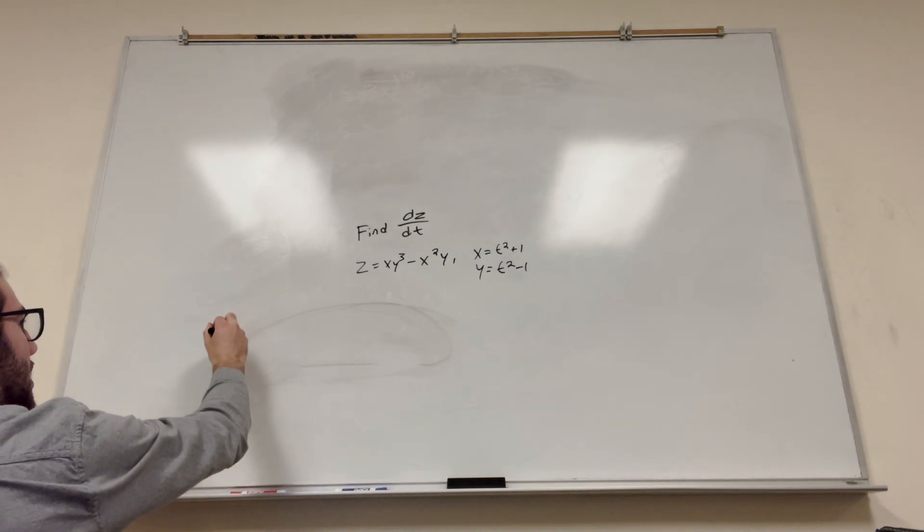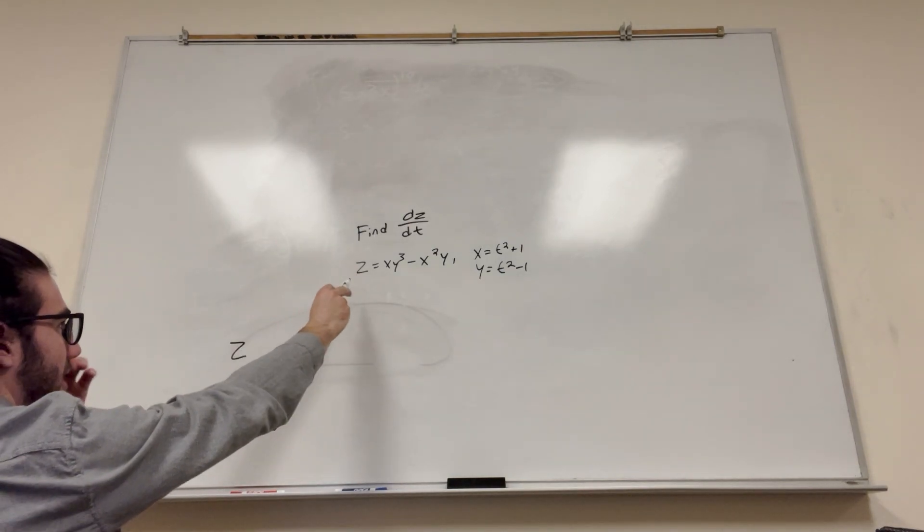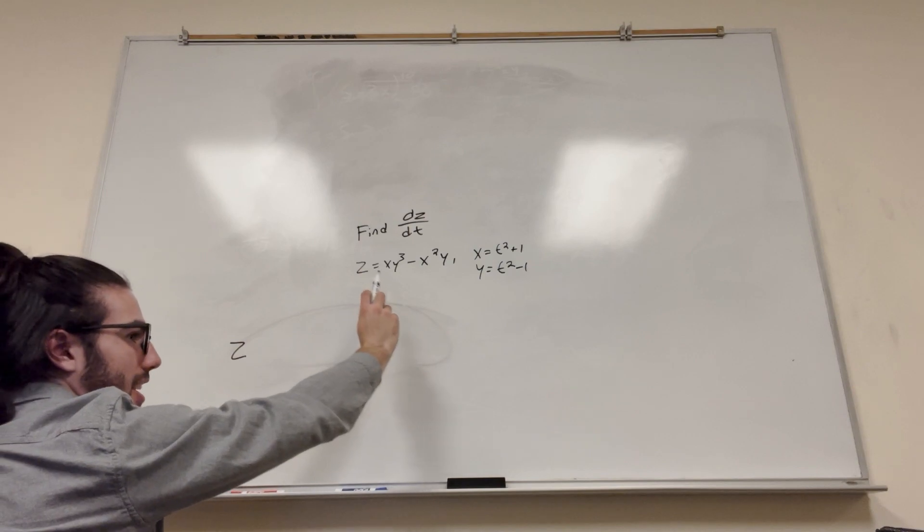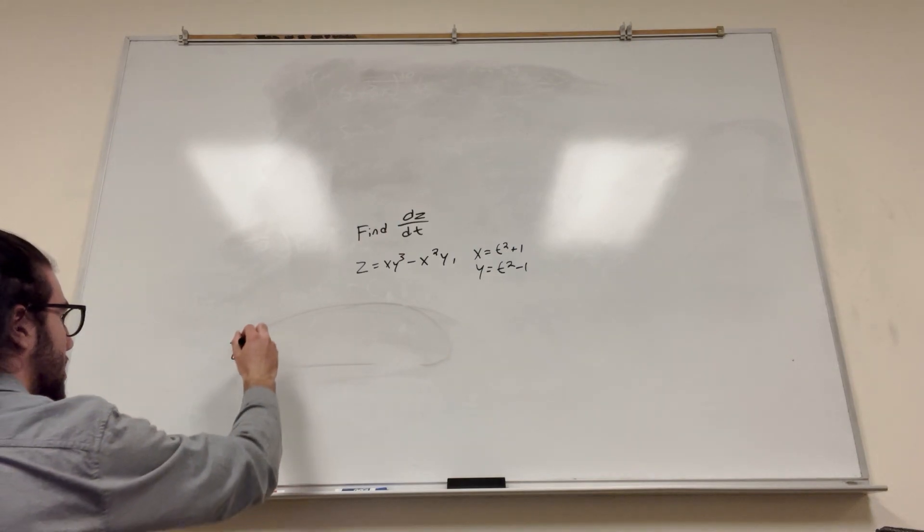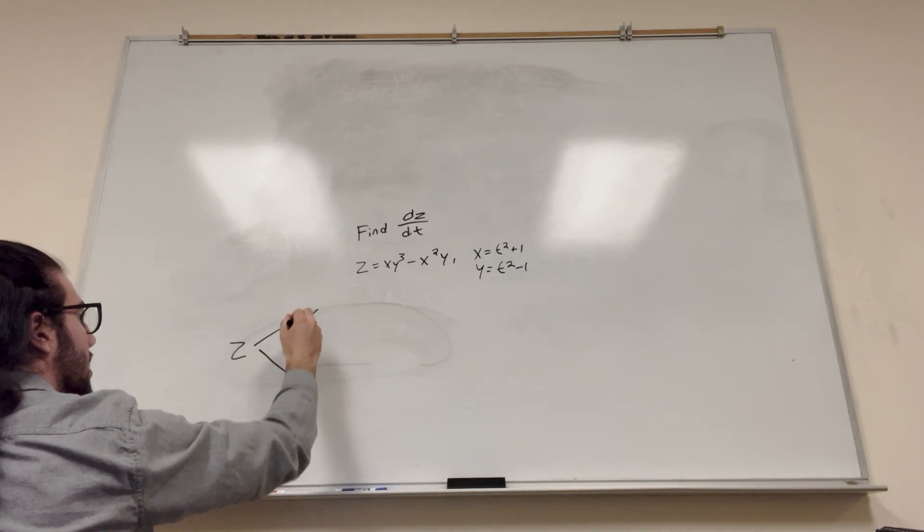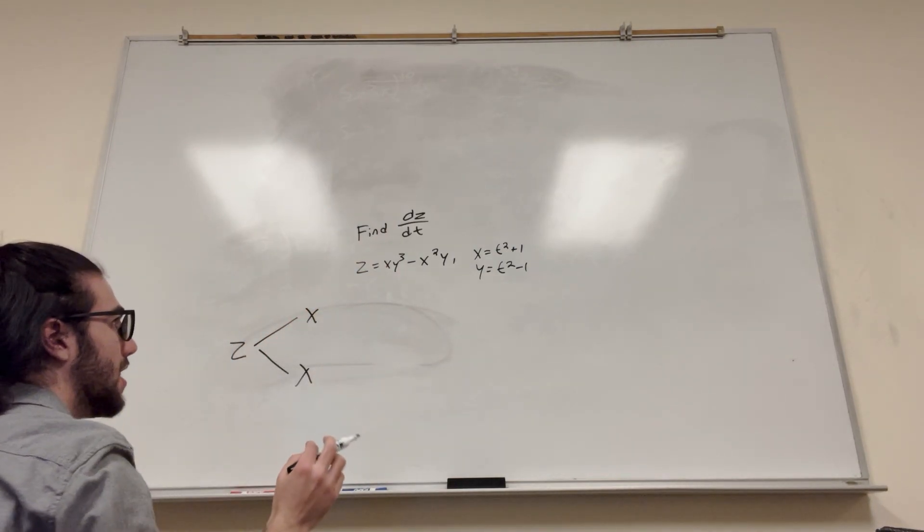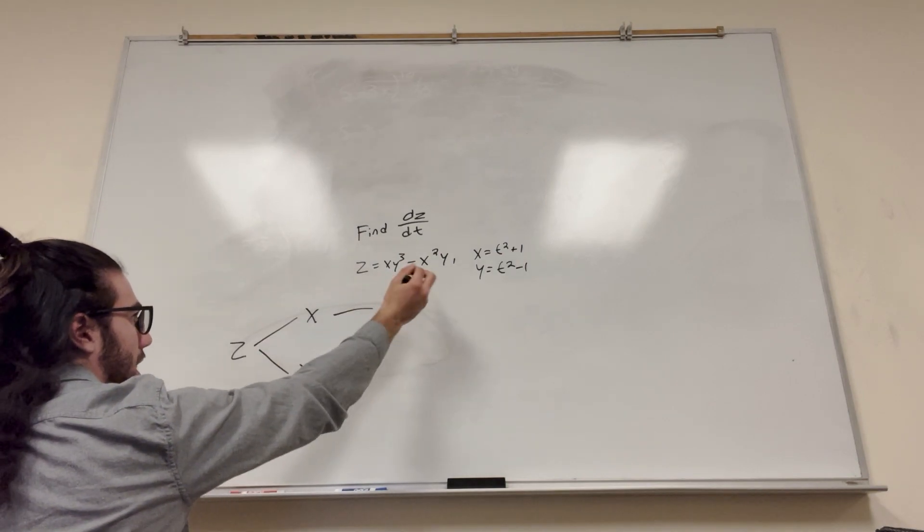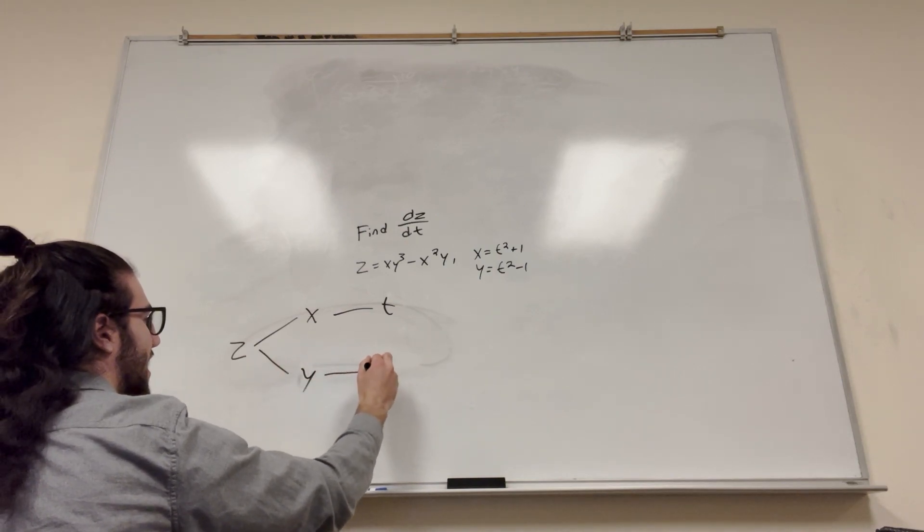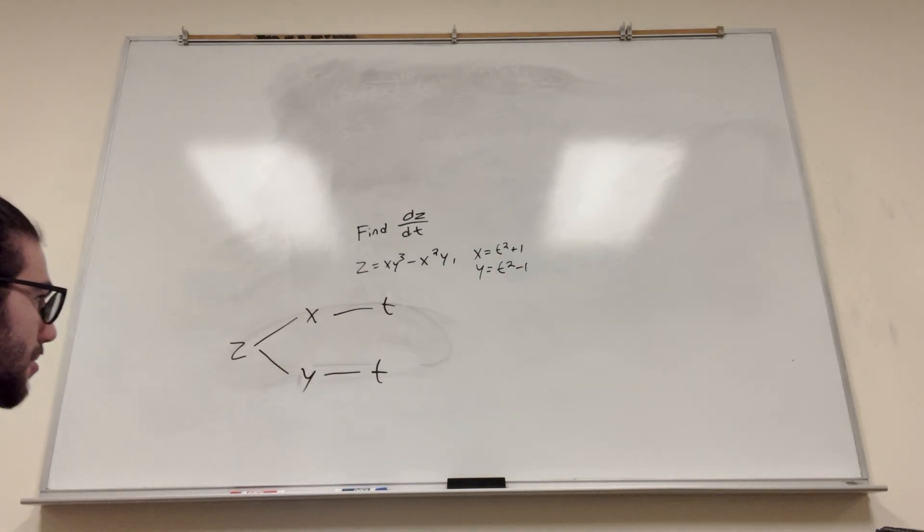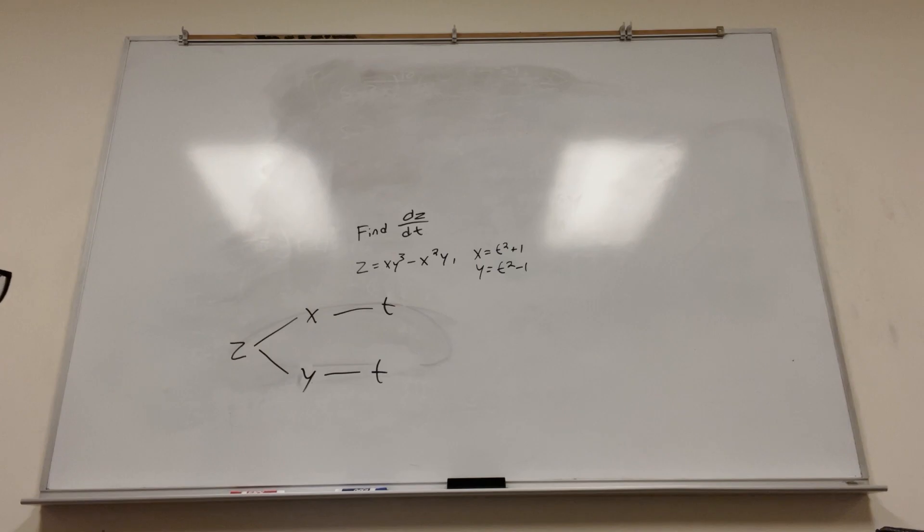Alright, so let's start with our main function, z. This is what we're trying to find. You have z is equal to x and y, but then each individual x and y is equal to a function of t, right? So it starts with z and it goes to x and y. Those are the two functions that z can become. But then x can only become t, and y can only become t. Alright, so here we have a chart. Now let me show you what you can do.